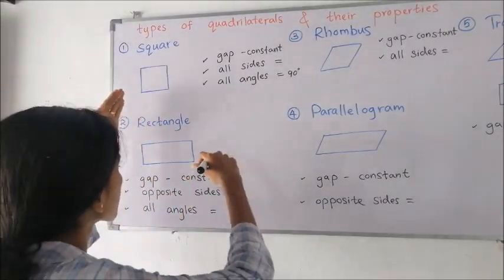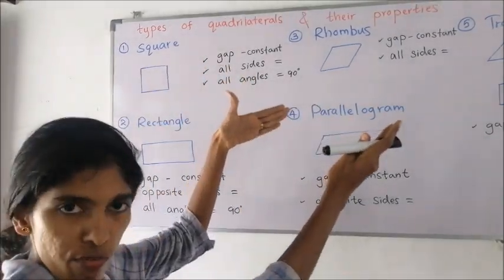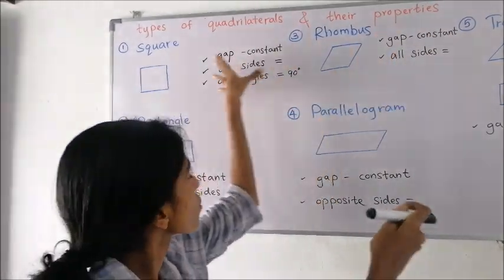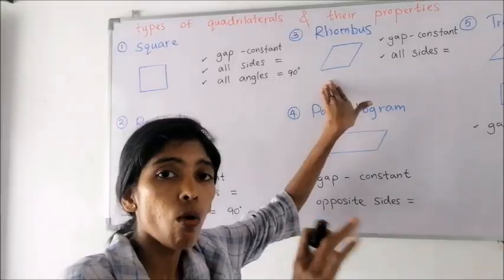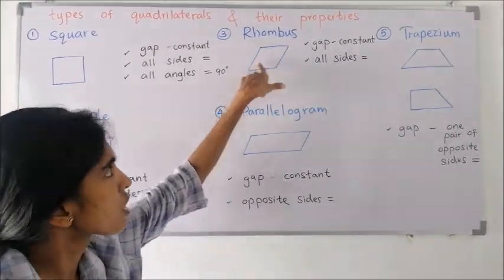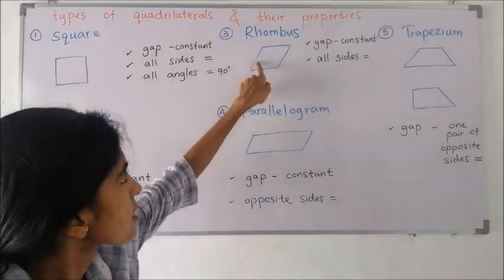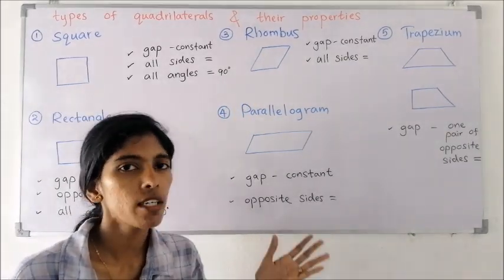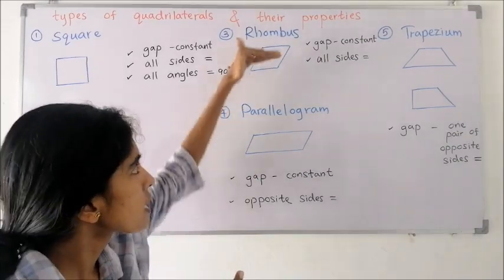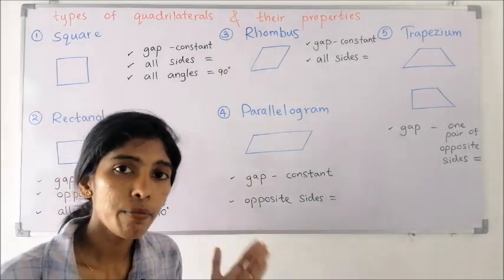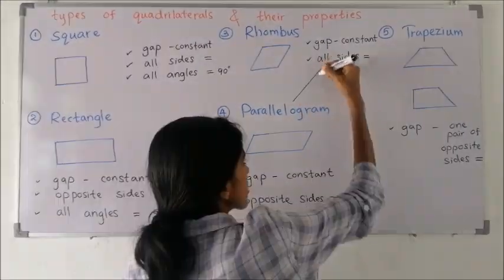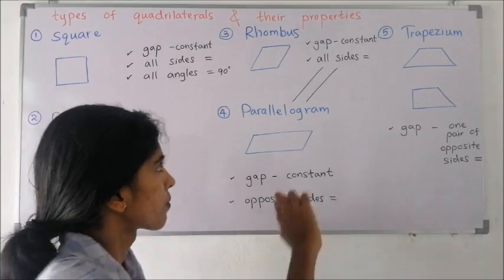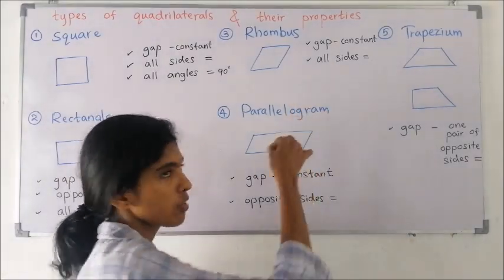The next one is a rhombus. When we give a small hit to a square it becomes slanted — that is a rhombus. In a rhombus all the sides are equal, like in a square. But the angles are not equal — this is an acute angle and this is an obtuse angle. So only sides are equal here. The gap between the opposite sides is also the same — even though they are slanted, the gap between those two opposite sides is the same.